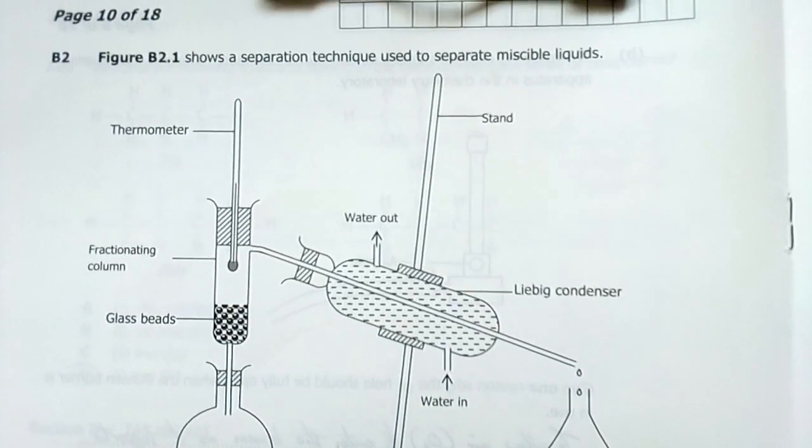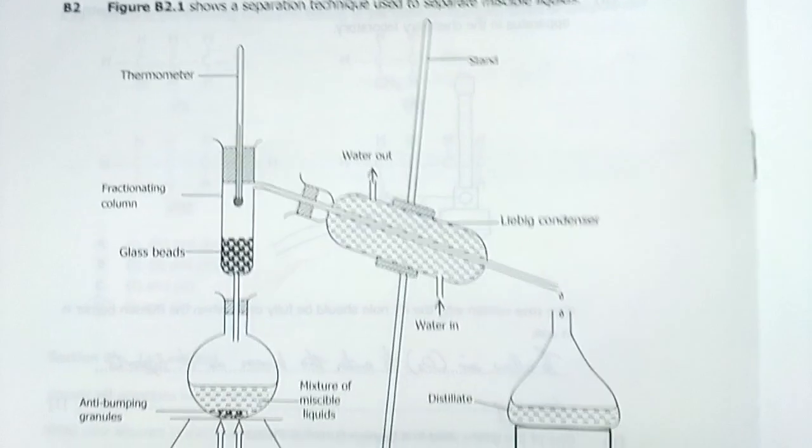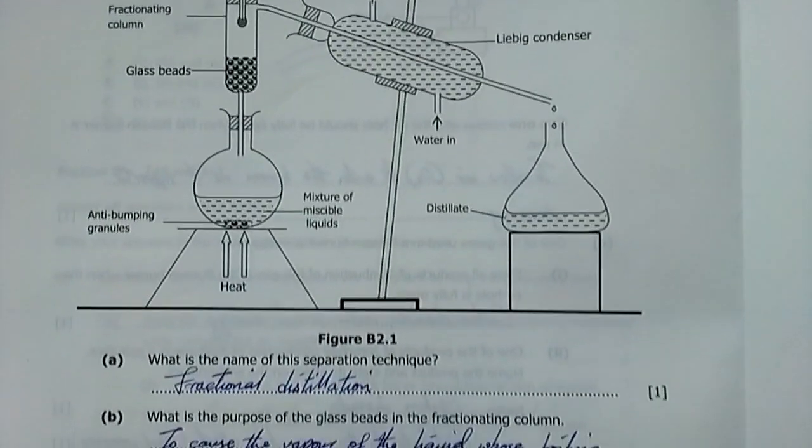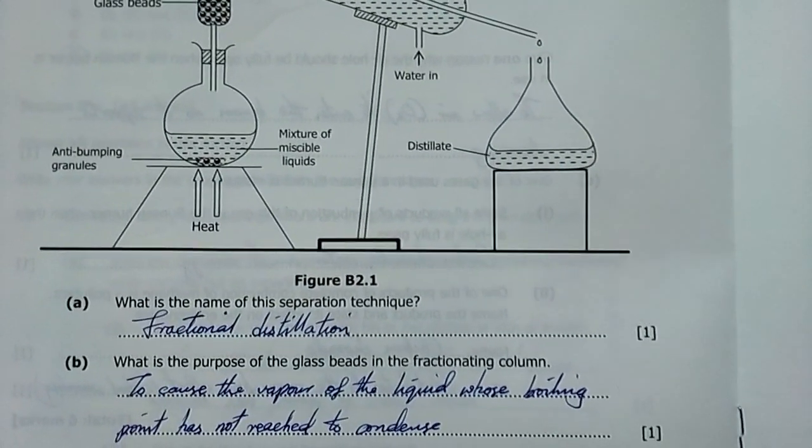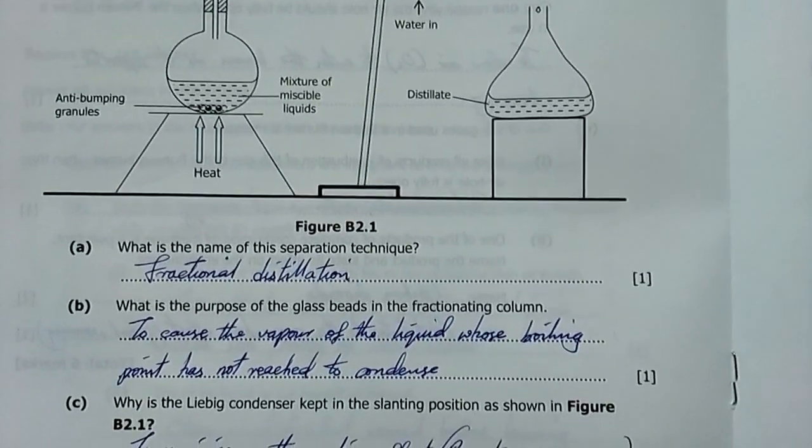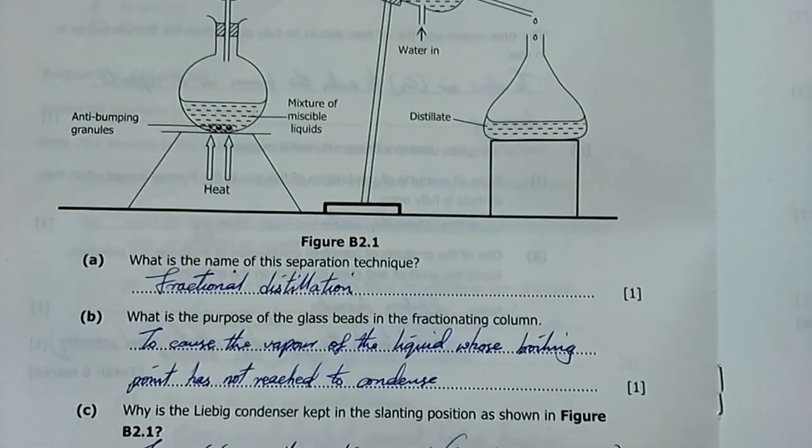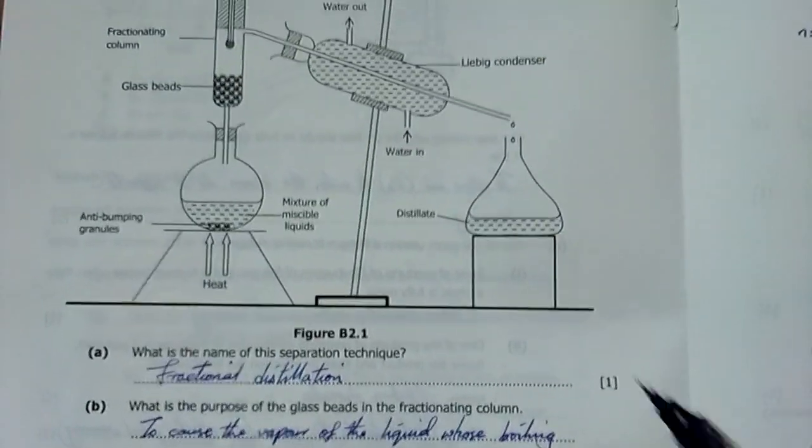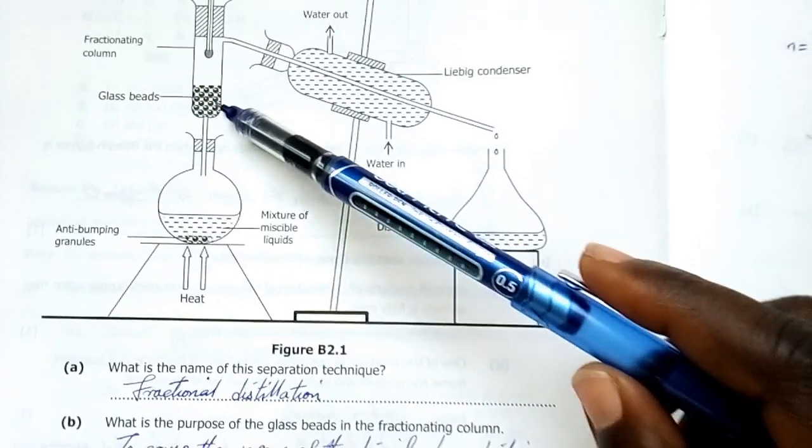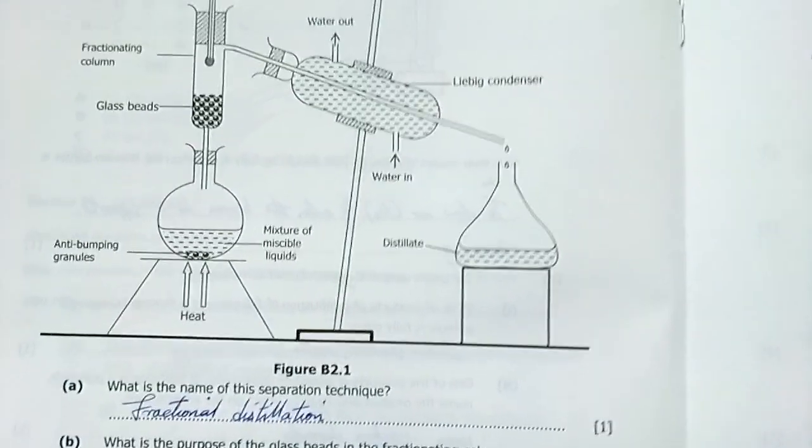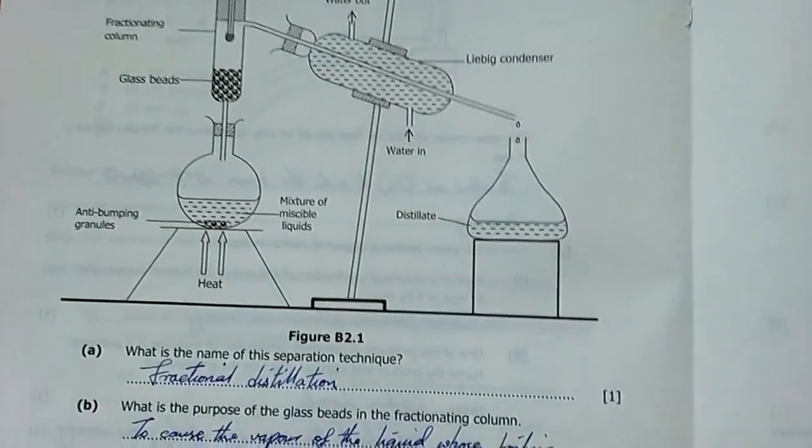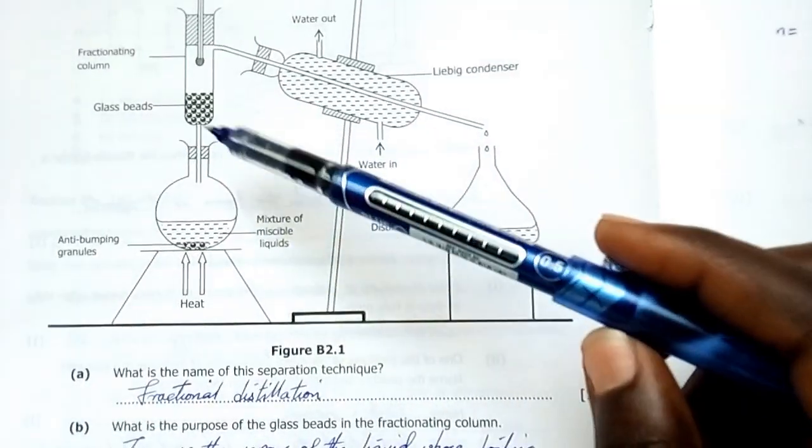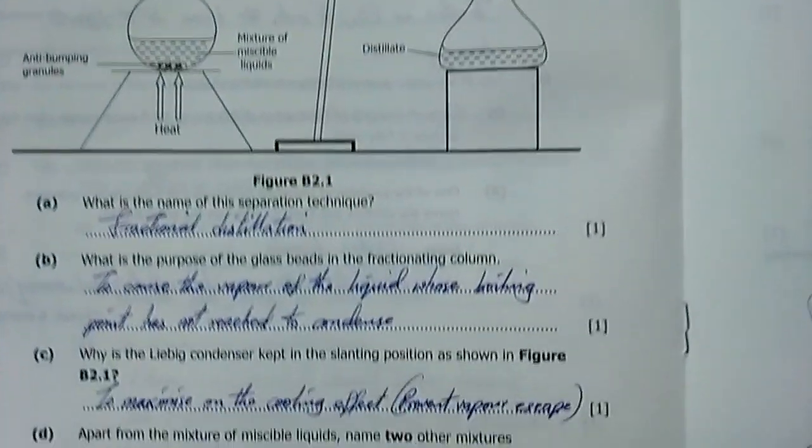Apparatus there shows a separation technique used in separating miscible liquids. That's fractional distillation. What is the name of this separation technique? Fractional distillation. What is the purpose of the glass beads in the fractionating column? The purpose is to cause the vapor of the liquid whose boiling point has not reached to be condensed. Therefore, the vapor whose BP has not been reached yet has to condense back. And only that vapor whose boiling point has been reached to have enough kinetic energy to pass through the beads and be condensed on the other end.